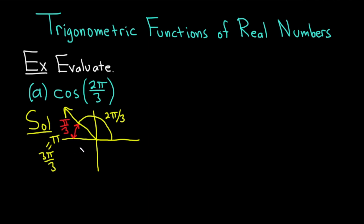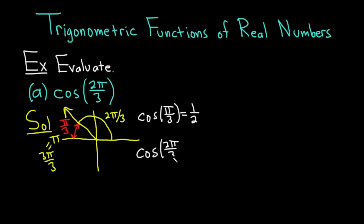So step one, you find the reference number by drawing a picture of your angle and looking for this distance. Step two is you compute the trig function value of your reference angle. This is from memory. The cosine of pi over 3 is equal to 1 half. And the last step is to actually write the answer down for our actual question. What about the cosine of 2 pi over 3?